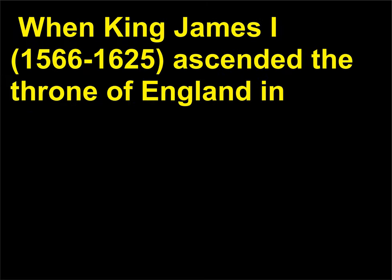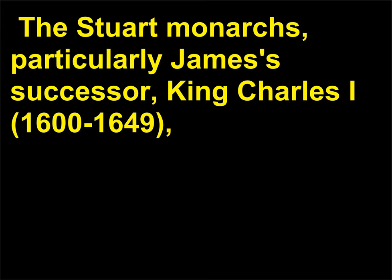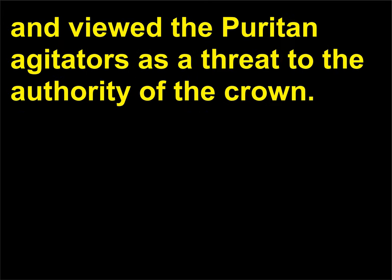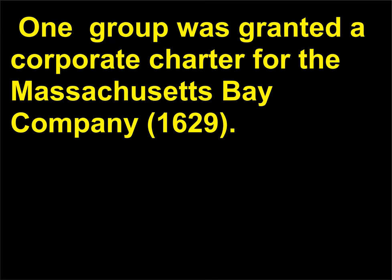When King James I, 1566–1625, ascended the throne of England in 1603, he was the first ruler of the house — or royal family — of Stuart. The Stuart monarchs, particularly James's successor King Charles I, 1600–1649, tried to enforce absolute adherence to the High Church of Anglicanism and viewed the Puritan agitators as a threat to the authority of the crown. Persecuted by the throne, groups of Puritans fled England for the New World. One group was granted a corporate charter for the Massachusetts Bay Company, 1629.